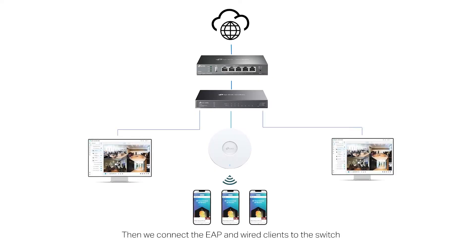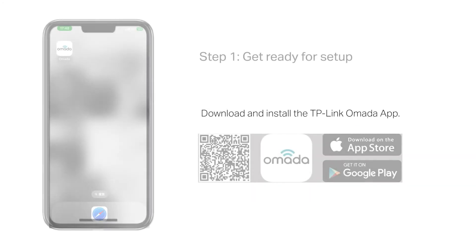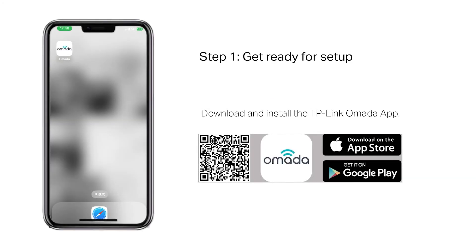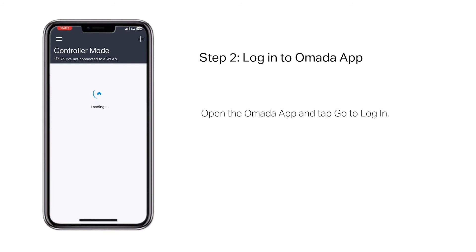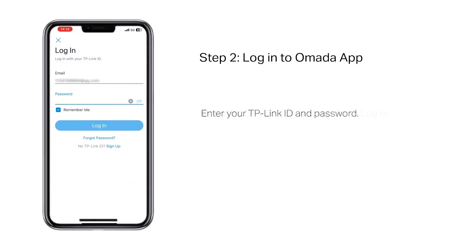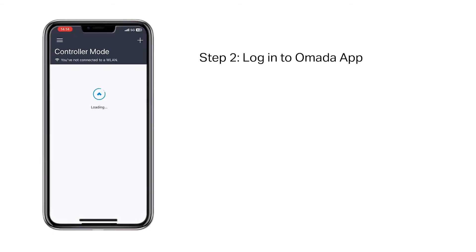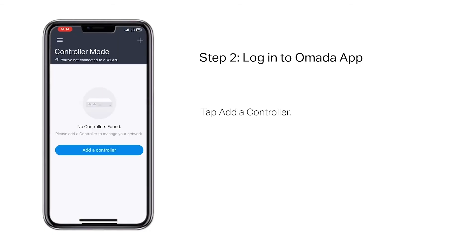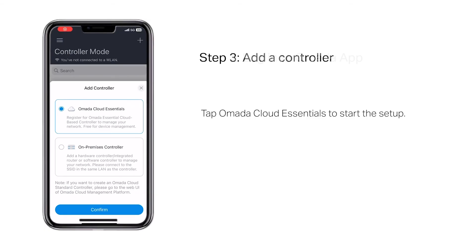Download and install the TP-Link Omada app first. Log in to the Omada app, open the app and tap 'Go to Login', enter your TP-Link ID and password. Tap 'Add a Controller', then tap 'Omada Cloud Essentials' to start the setup.